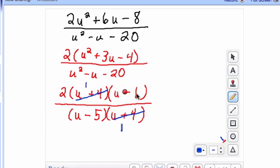And then we can't simplify anything else. So we're going to, you could multiply, distribute 2 through, but we could just leave it as 2 times the quantity of u minus 1, all divided by u minus 5.